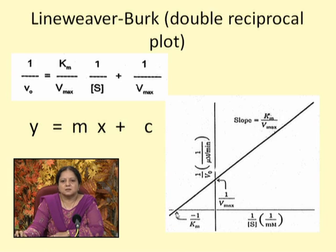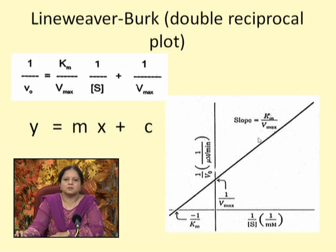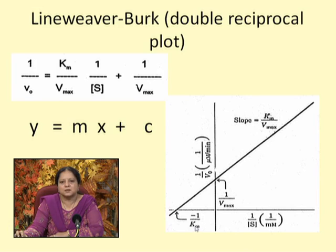The x-intercept is important because it gives the value of Km. When enzyme kinetic data is plotted as a double reciprocal plot, one wants the y-axis intersection — which gives 1/Vmax — and the x-axis intersection — which gives minus 1/Km — to obtain numerical values of Vmax and Km. Besides the Lineweaver-Burk plot, there are other linear versions of the Michaelis-Menten equation worth studying.